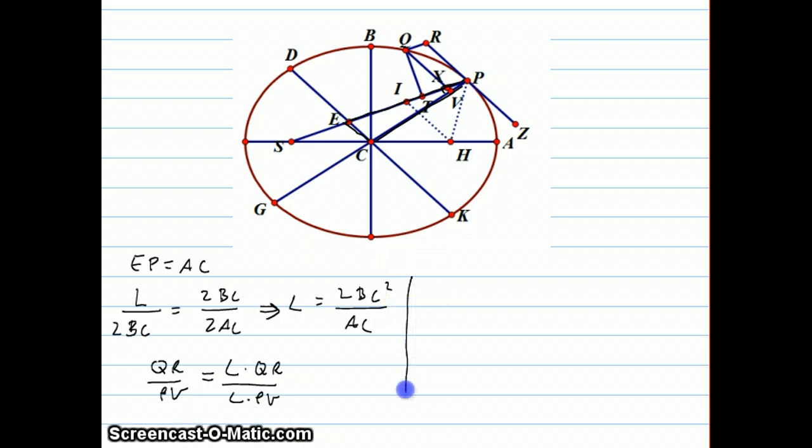And because of that, I can say that PX over PV, those are sides of the smaller similar triangle, is equal to PE over PC, which are sides of the bigger similar triangle. Now QRPX is a parallelogram, so we can say that PX is the same thing as QR. And from before, we already have that EP equals AC.